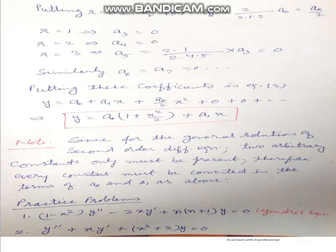In equation 6 we put r = 0, 1, 2, 3, and so on. For r = 0: a2 = (−1·−2)/(2·1·2)·a0 = a0/2. For r = 1: a3 = 0. For r = 2: a4 = 0. Since a3 = 0, then a5 = 0; since a4 = 0, then a5 = 0; and all further coefficients a6, a7, ... are also equal to zero.